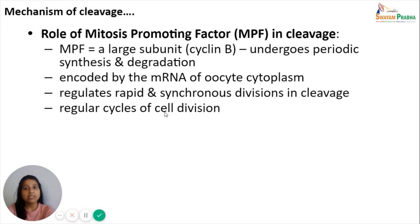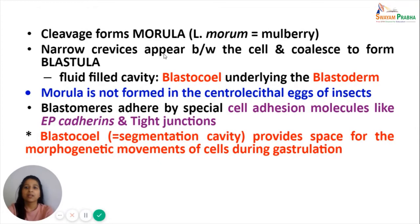This completes the topic of cleavage. Next, we start with the types of blastula. Cleavages form a solid ball-like structure known as morula. Soon, narrow crevices appear between the cells of the morula, which coalesce to form blastoma. This develops a fluid-filled cavity called blastocele, which underlies the cellular layer known as blastoderm in the blastula. However, morula is not formed in the centrolecithal eggs of insects.